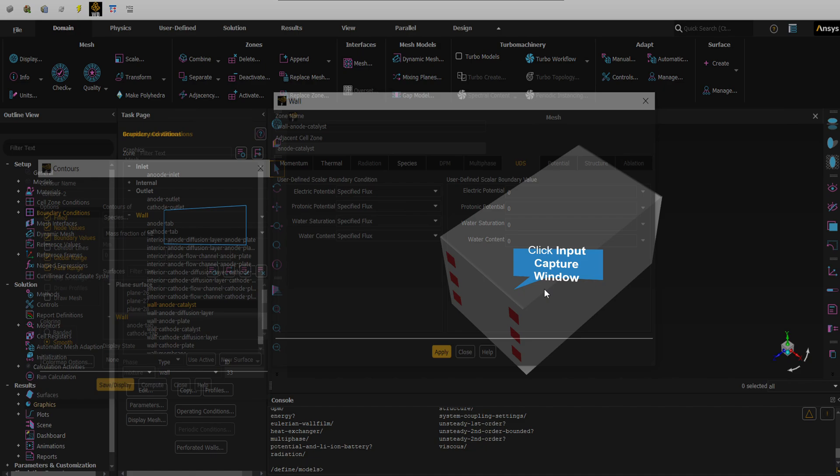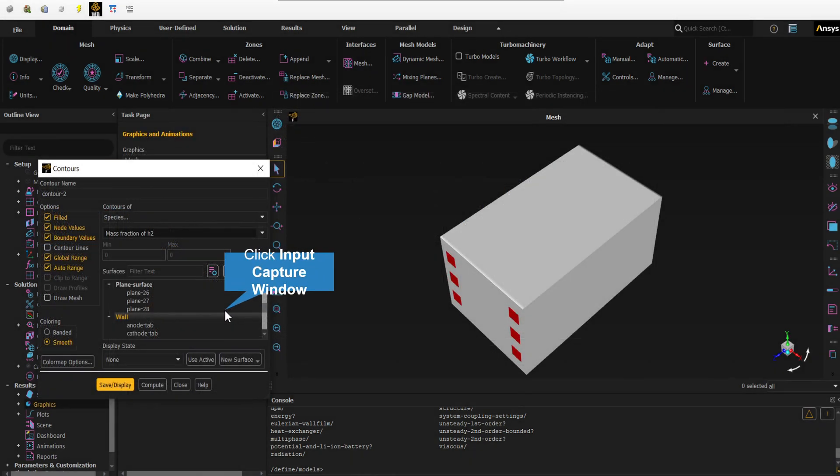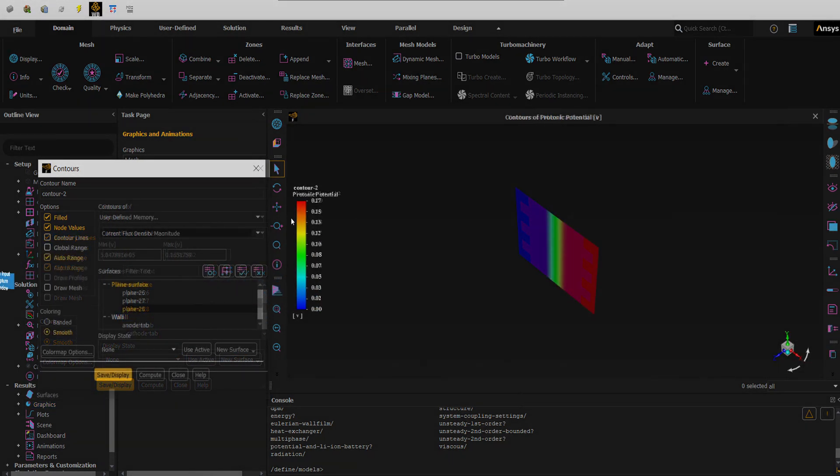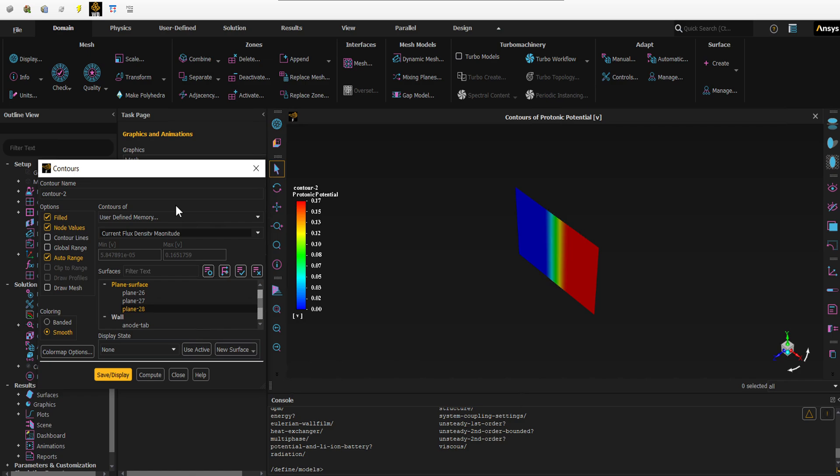We return to the surfaces section. The newly created plane has appeared in this section. We select this plane so that the contour is displayed on it. Then we click on display. As you can see, the protonic potential contour is displayed in two dimensions.